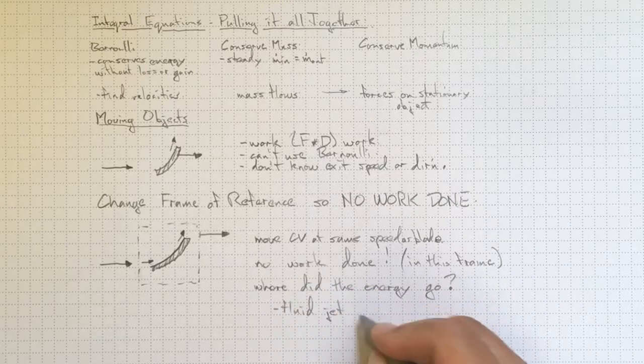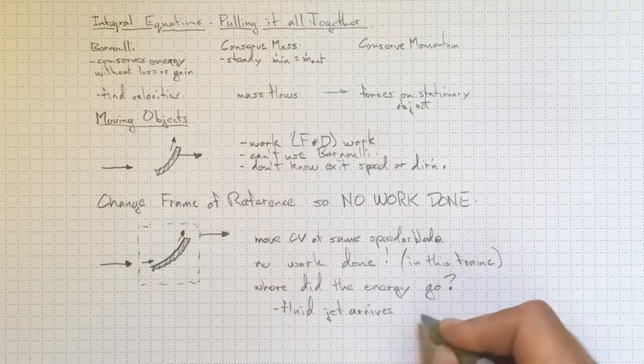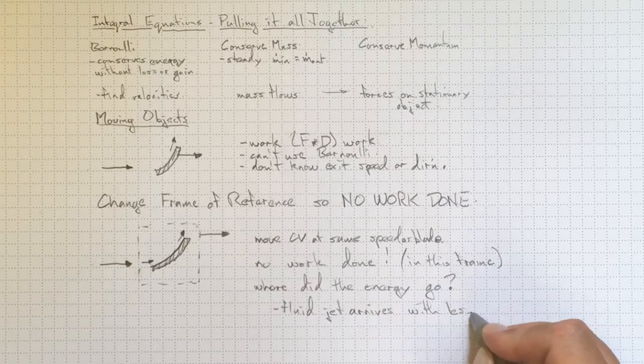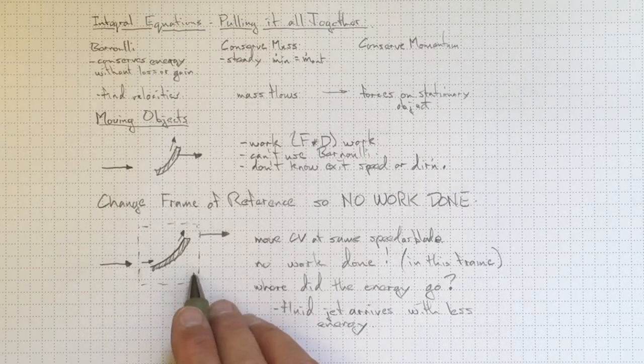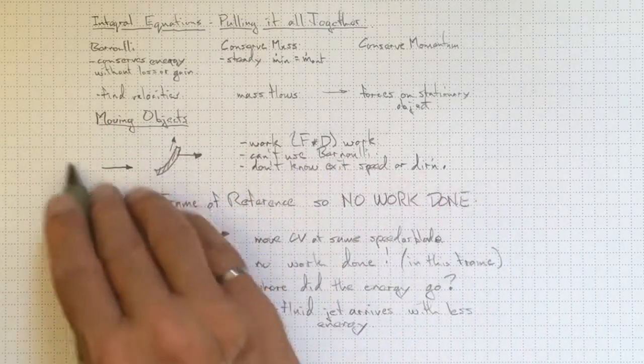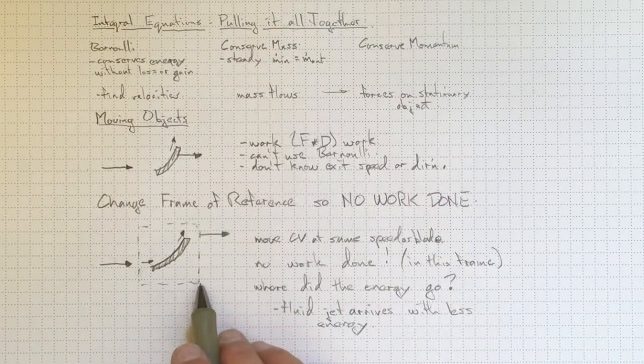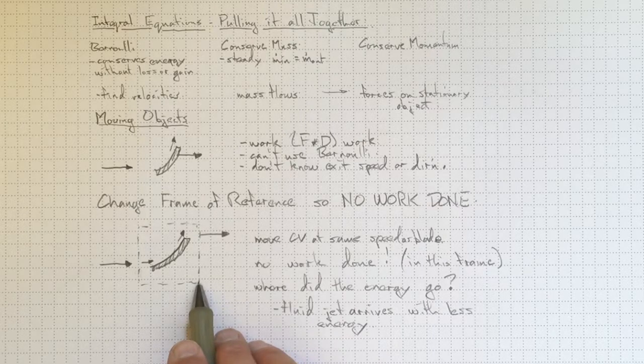So what's happening? The fluid jet arrives with less energy. If all of this works out, we've converted this moving problem into a stationary problem, and then we can convert it back again.